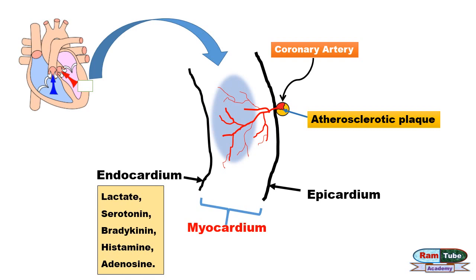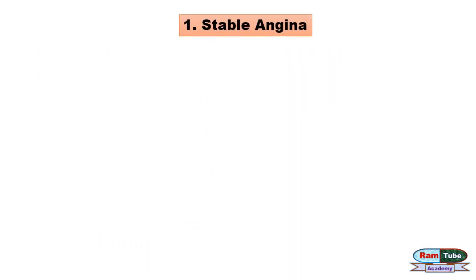This also accelerates the release of chemicals like serotonin, bradykinin, histamine, and importantly adenosine, which triggers the pain in the chest. There are mainly three types of angina; number one is stable angina.